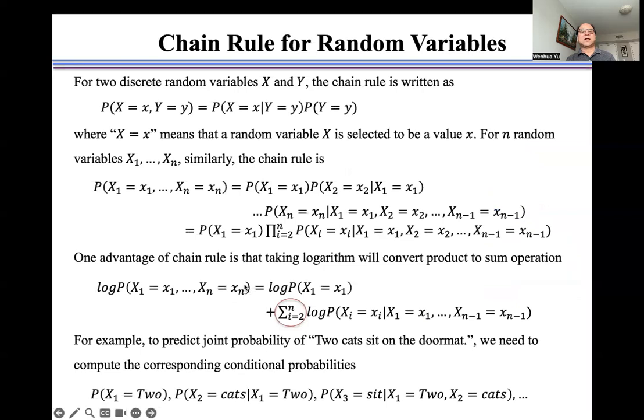For two discrete random variables X and Y, the chain rule is written as the joint probability of X and Y equals the product of conditional probability of X given Y and independent probability of Y.